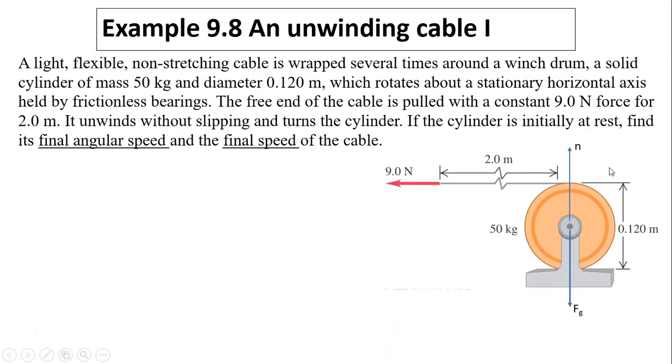Let's take a look at another example. A light, flexible, non-stretching cable is wrapped several times around a winch drum, a solid cylinder of mass 50 kilograms and diameter 0.12 meters, which rotates about a stationary horizontal axis held by frictionless bearings. The free end of the cable is pulled with a constant 9 newton force for 2 meters. It unwinds without slipping and turns the cylinder. If the cylinder is initially at rest, find its final angular speed and the final speed of the cable.